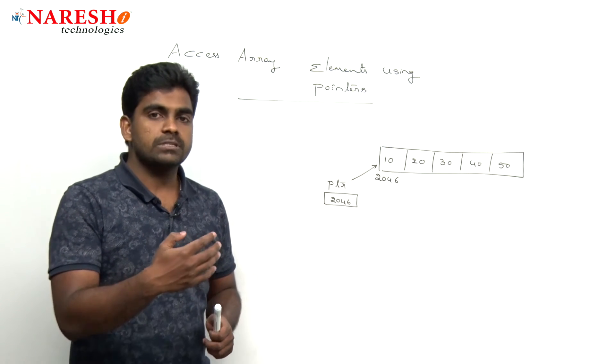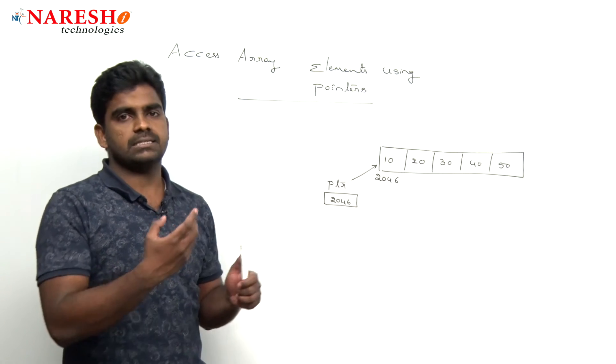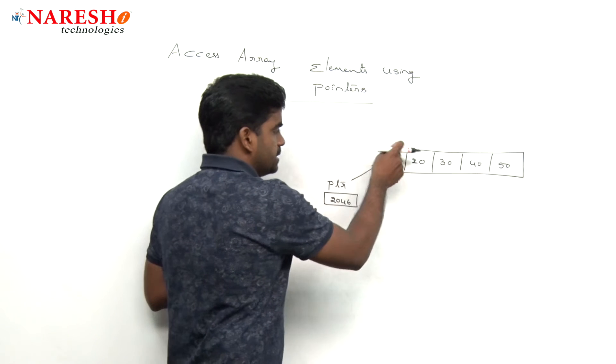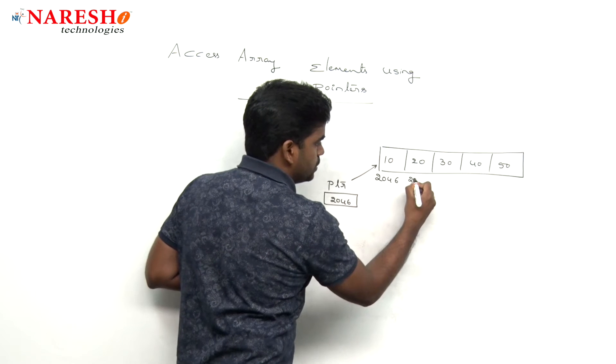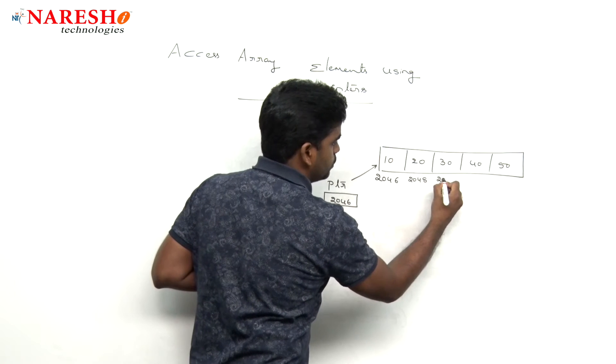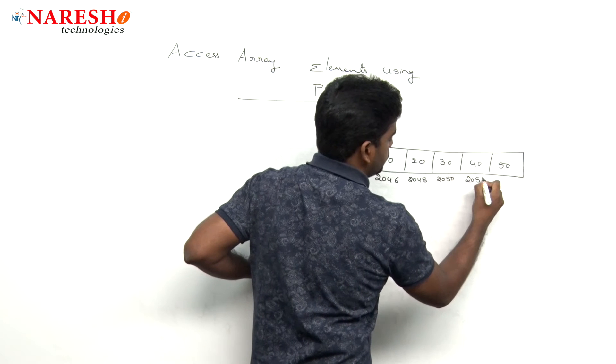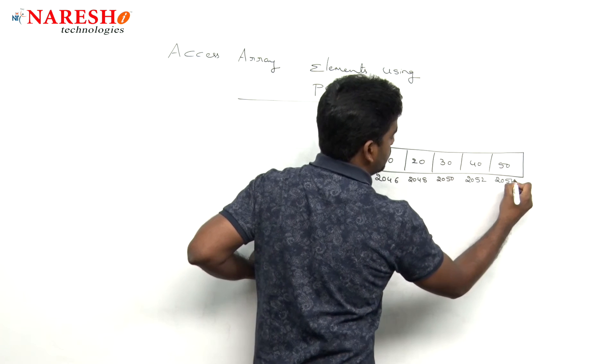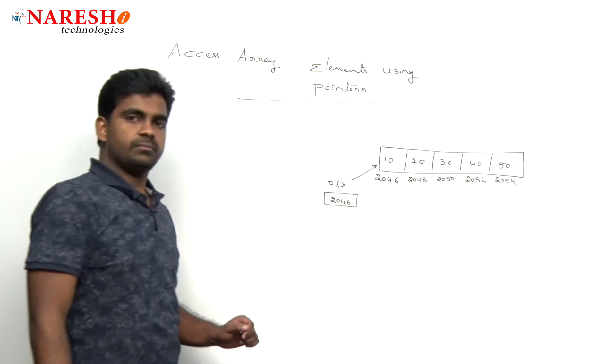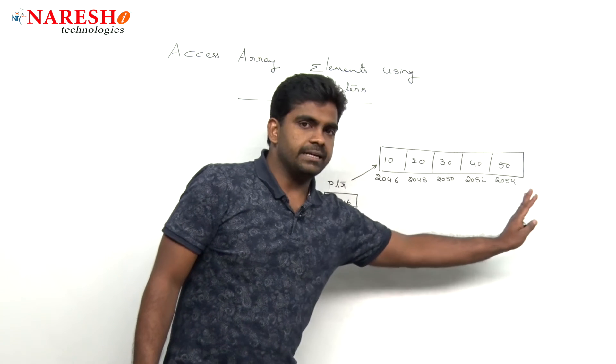How can we process the elements through address? Integer size is 2 bytes, and memory will be allocated at addresses 2046, 2048, 2050, 2052, 2054 like this.